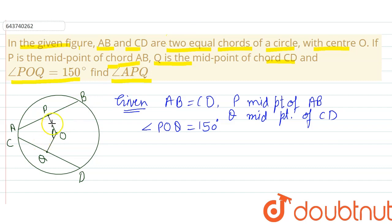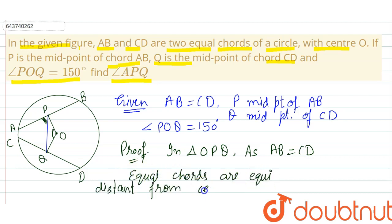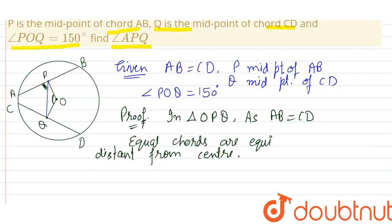So, to find this angle, let's join this P to Q also. So, we need to find this angle APQ. Student, first observe in triangle OPQ as the chords are equal as AB is equals to CD and we know the statement of the theorem that equal chords are equidistant from center. Equidistant. They are perpendicular distance from the center always equal.